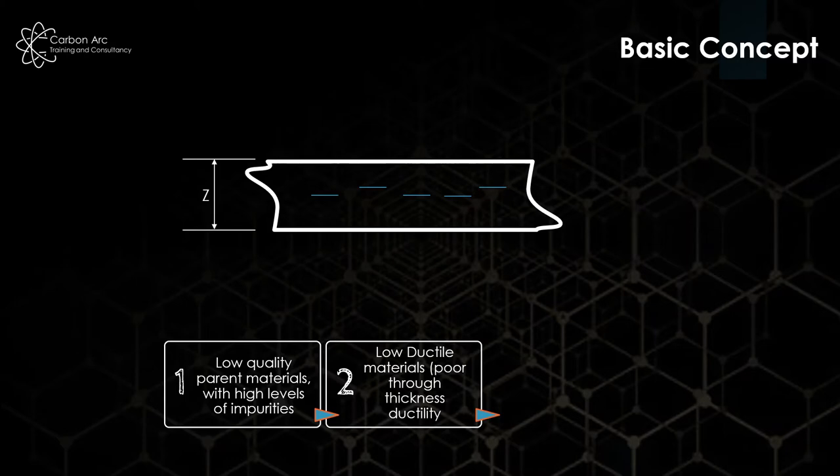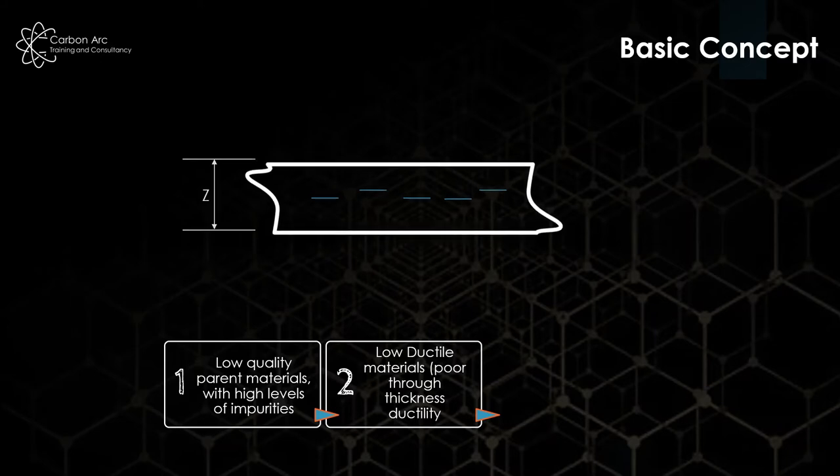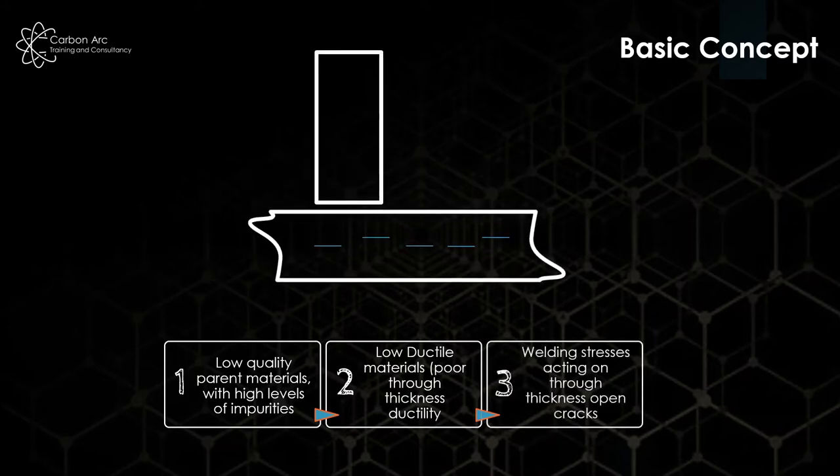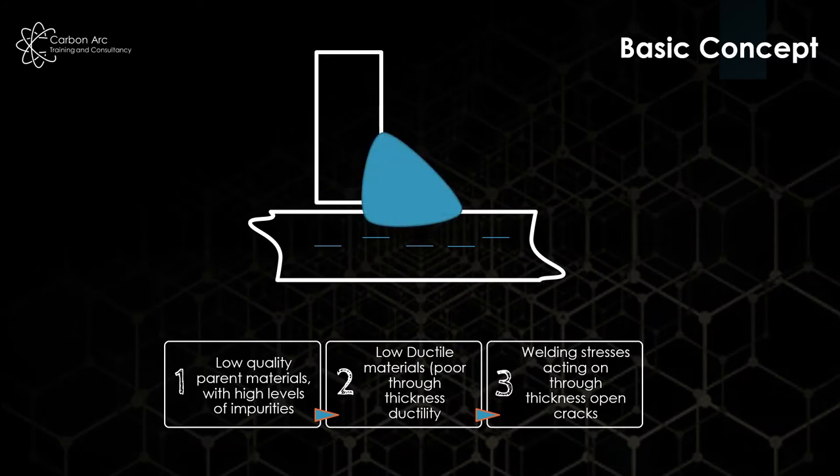So we have a presence of impurities which drive through thickness ductility drop. And then when we put that into welding and we have welding stresses, so here we've put a fillet weld on our drawing, we have weld shrinkage pulling that through thickness of the bottom plate up towards the weld. But we also have a restraint stopping the whole plate from moving.